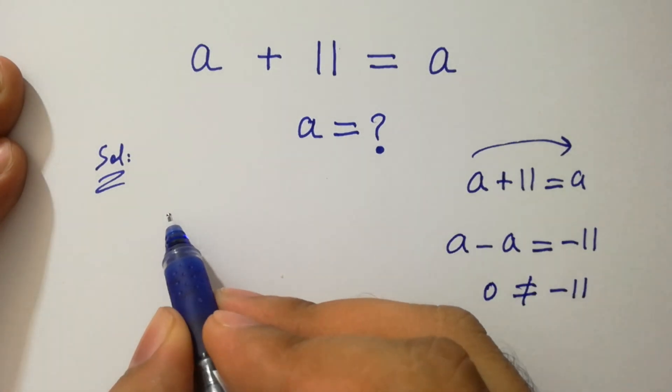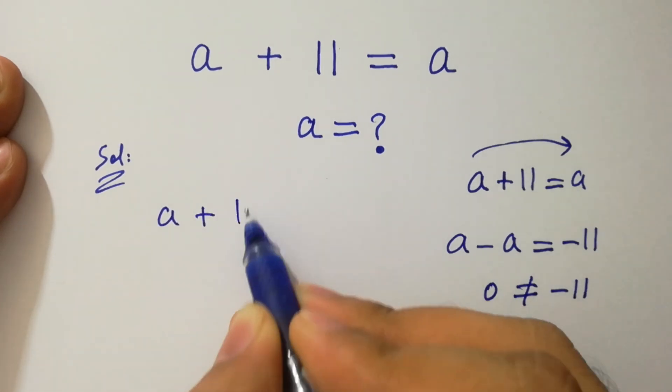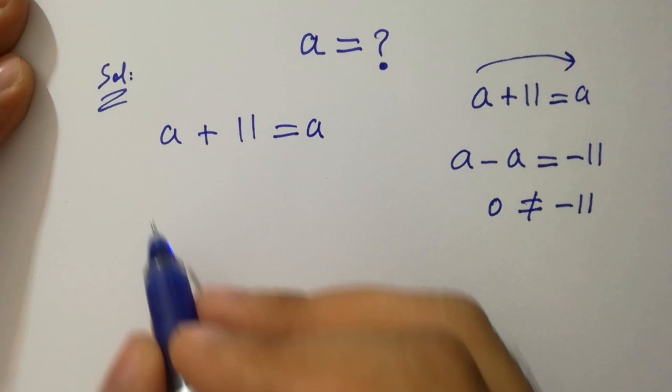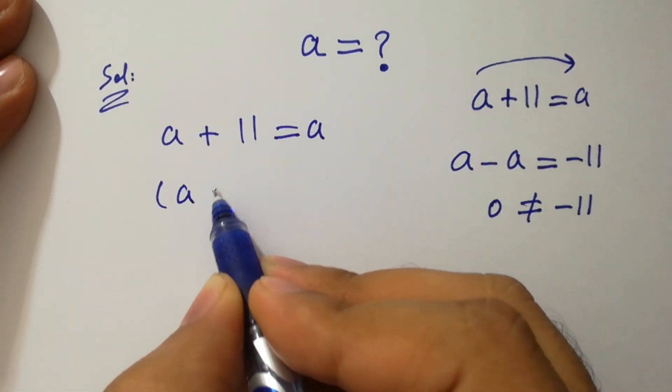We have a question here, a plus 11 equal to a. To solve this, take square on both sides.